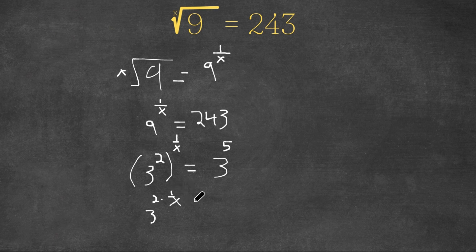And 2 times 1 over x. This is equal to 2 over x. So this is 3 to the power of 2 over x.